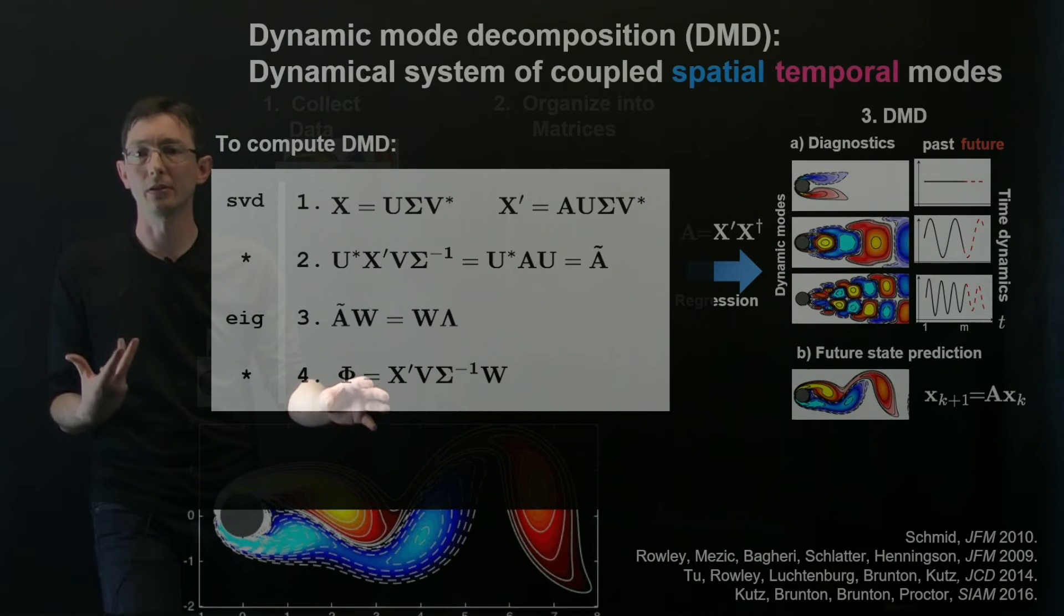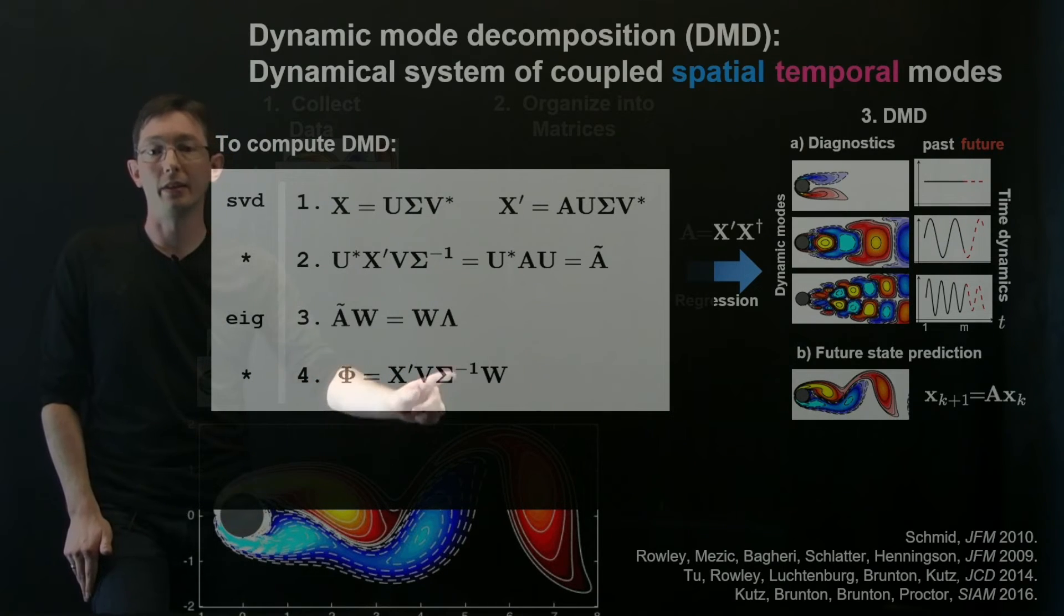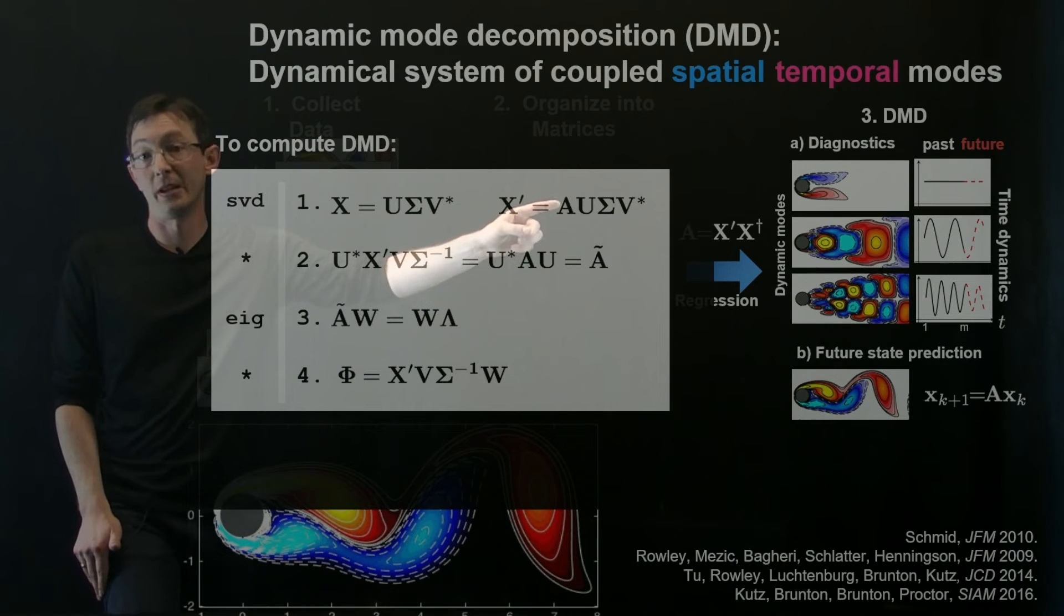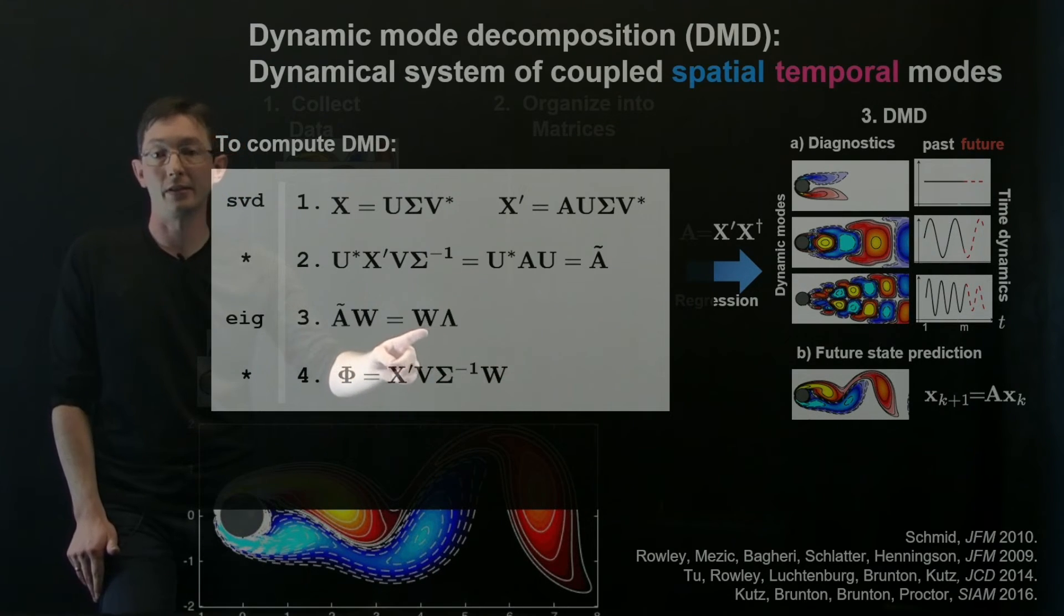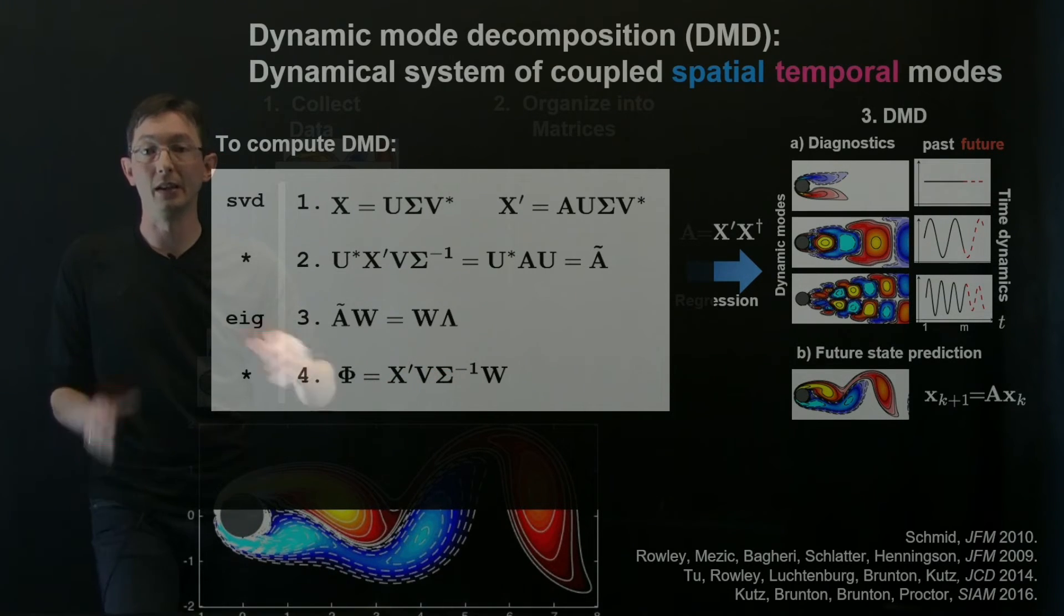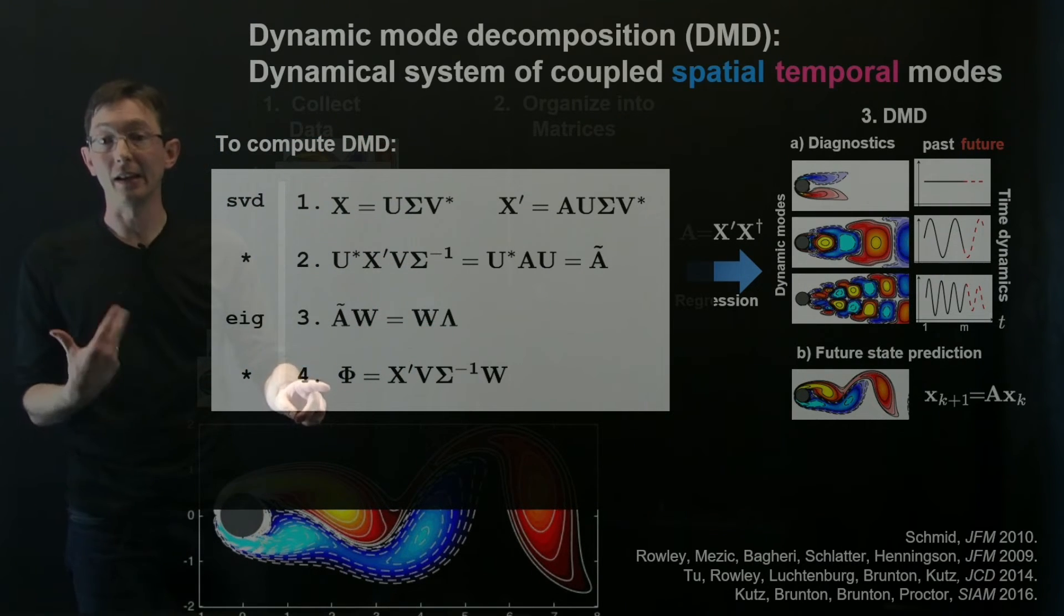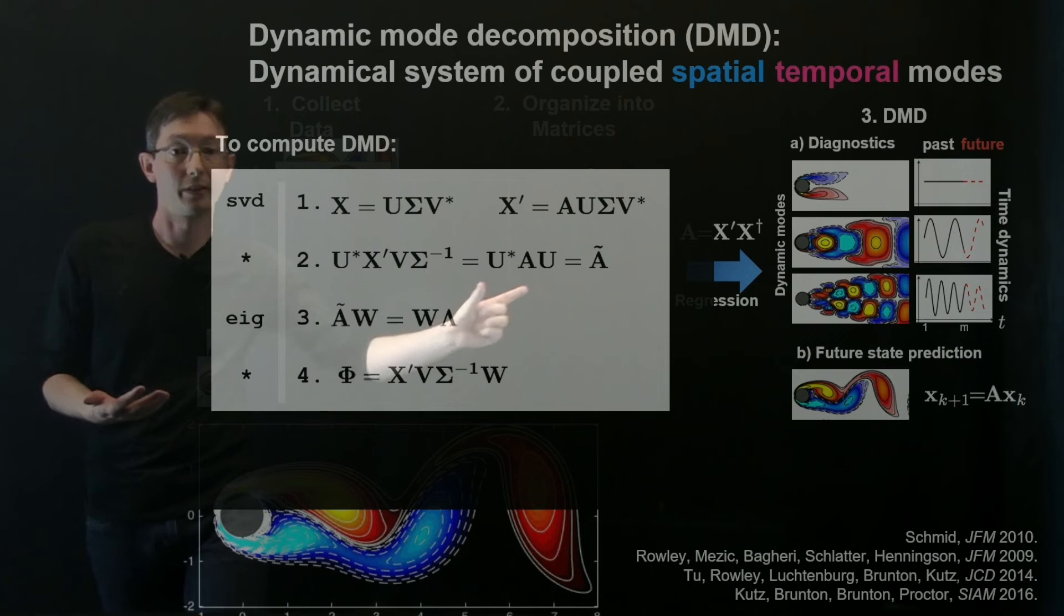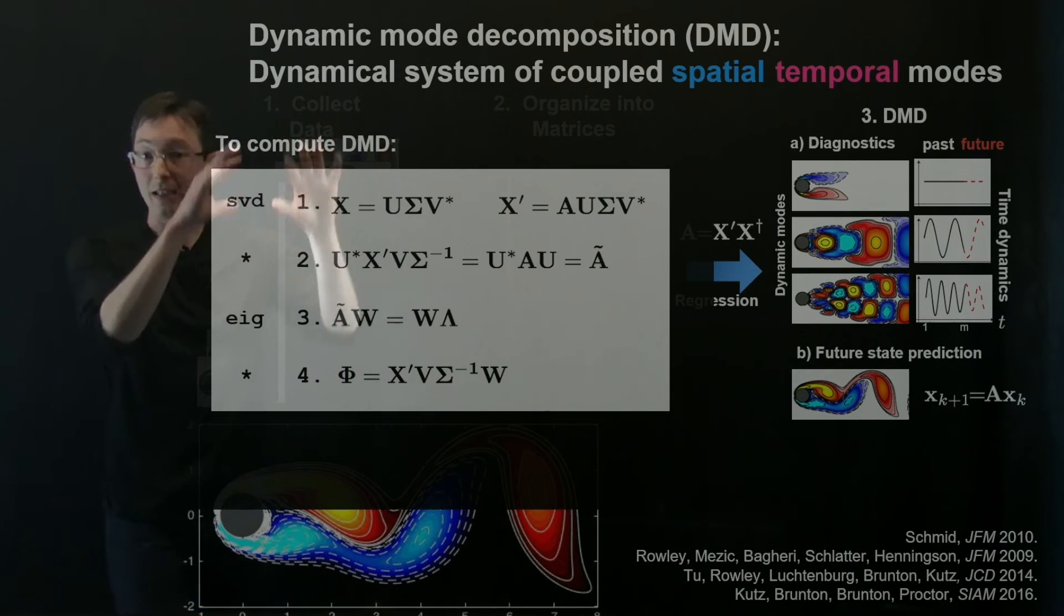And so the last step to, so I have the eigenvectors of my little projected A matrix. And now the last step is to get these big eigenvectors of the original A matrix using this formula here. And this is actually the formula from Jonathan Tu's 2014 JCD paper. This is slightly different than the original formulation that Peter Schmidt wrote down. And Jonathan Tu actually proved that these high dimensional eigenvectors are actual eigenvectors of the original A matrix. But basically you can just compute these. You know what all of these matrices are. These are your little eigenvectors of A tilde. These are the matrices from your singular value decomposition. And this is your big time shifted data matrix. And so you can compute all of these.